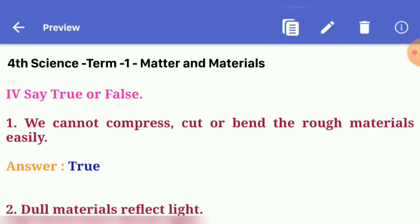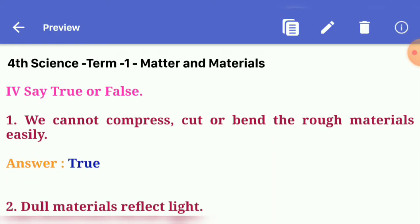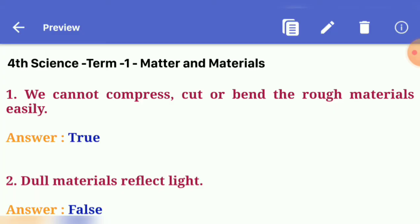Next, fourth roman, say true or false. First one: we cannot compress, cut or bend the rough materials easily. Answer: true.